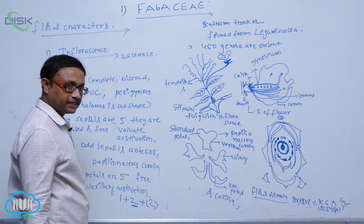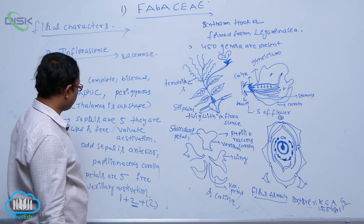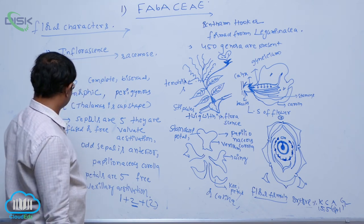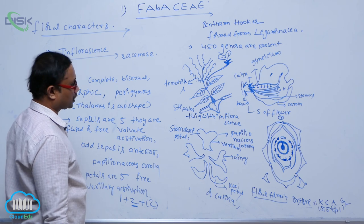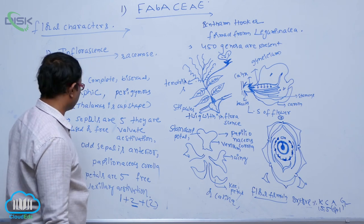This corolla is attractive to insects for the cross-pollination process.